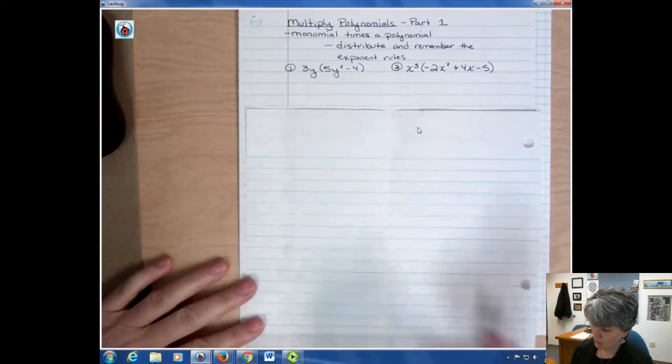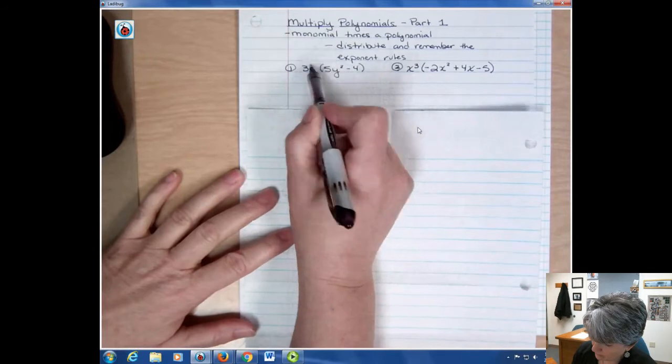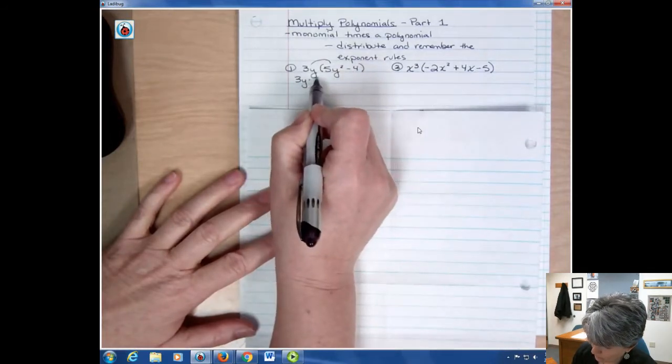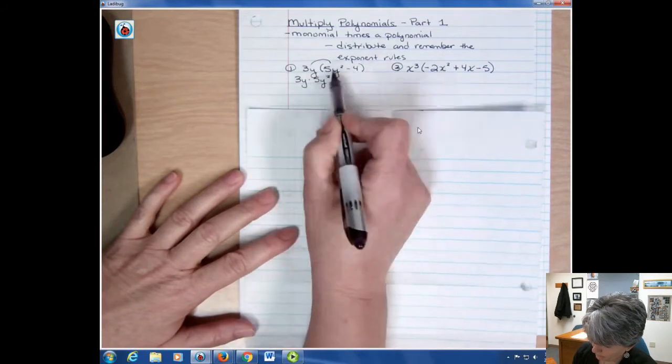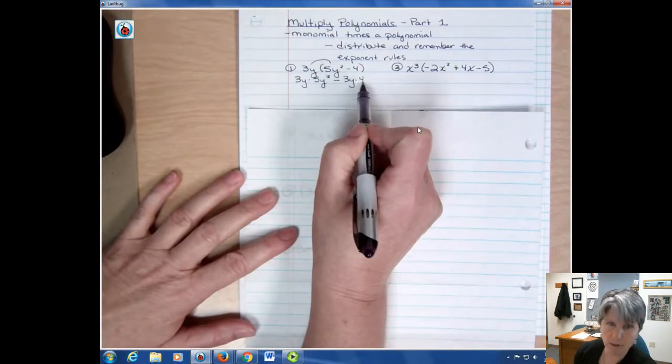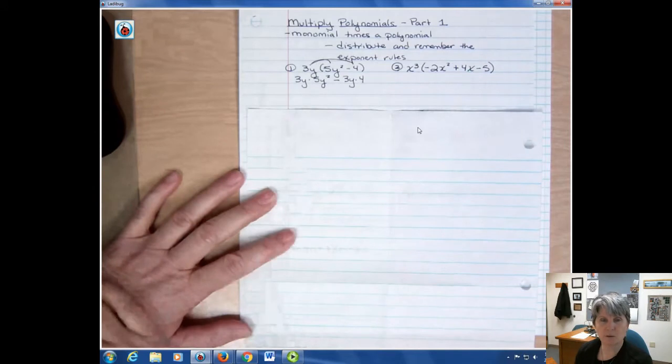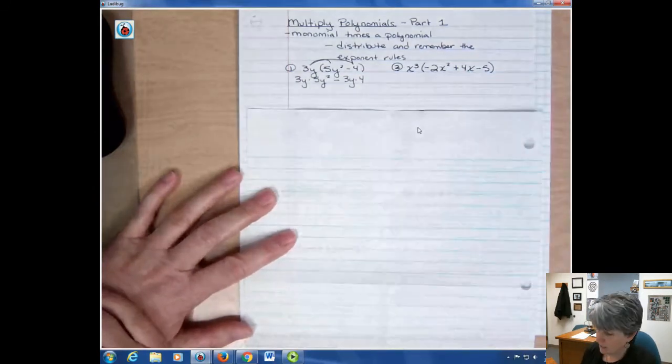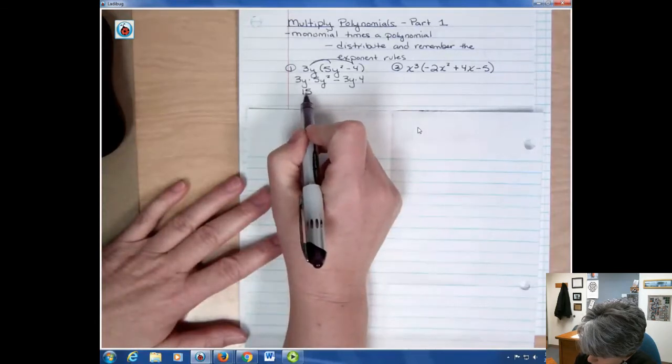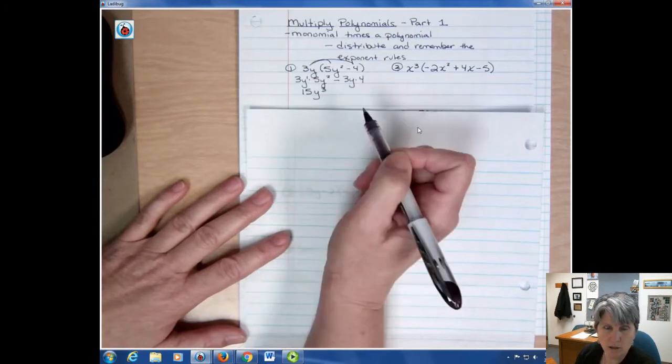So if I have 3y times 5y squared minus 4, I'm going to take 3y times 5y squared. You don't have to write this out, but I'm going to do that. Then you have a minus and then you have 3y times 4, right? So you're going to do those two multiplications. And so what's going to happen in the first case is we have 3 times 5, which is 15, and we have one y and two more y's. So we add those powers together to get y to the third.